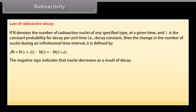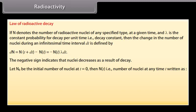The negative sign indicates that nuclei decreases as a result of decay. Let N not be the initial number of nuclei at T is equal to 0. Then N(T), that is number of nuclei at any time T, is written as N(T) is equal to N not into e raised to the power minus lambda T.